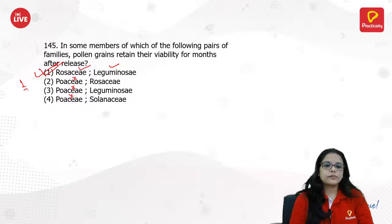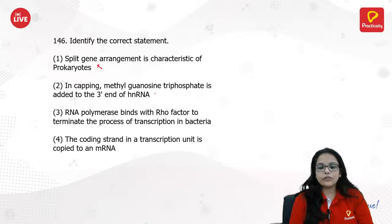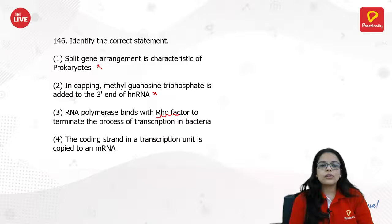Identify the correct statement: Split gene arrangement is not found in prokaryotes. RNA polymerase binds with the rho factor to terminate transcription — yes, the rho factor is used to terminate transcription. When transcription is over, the rho factor comes and joins the complex and terminates the process.